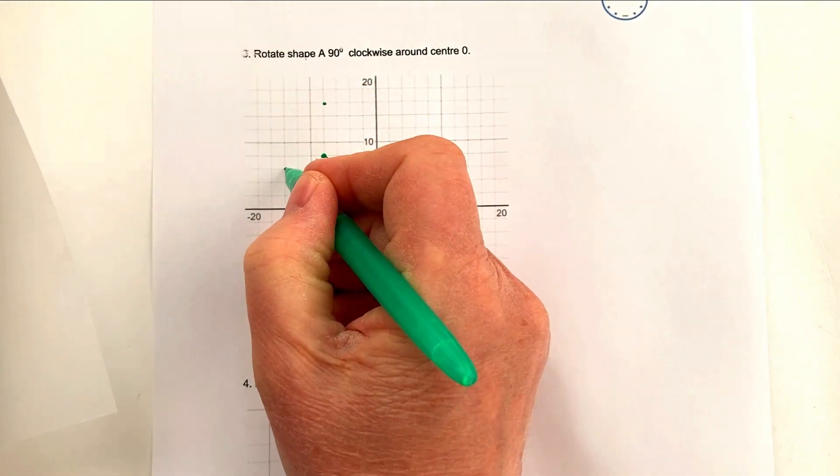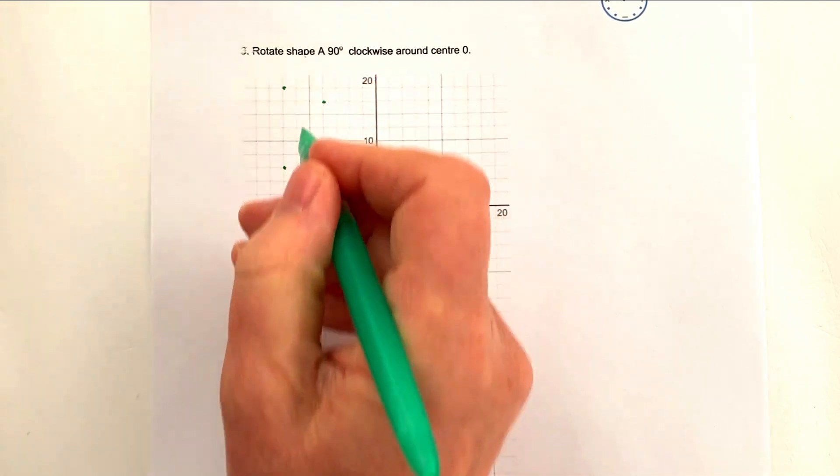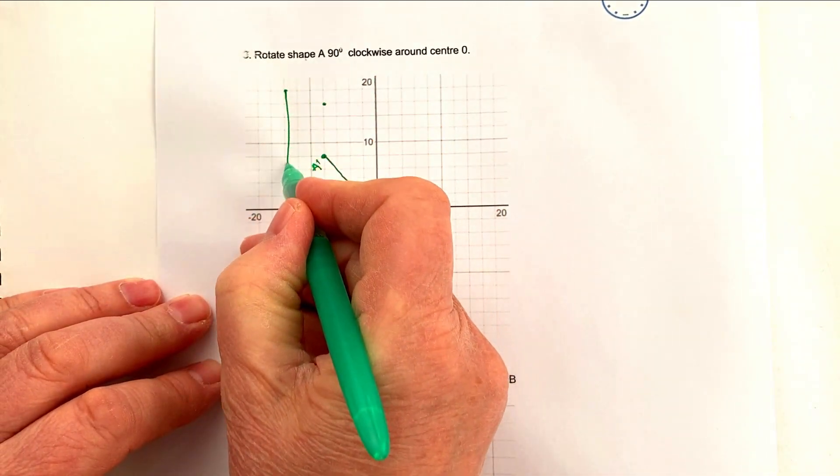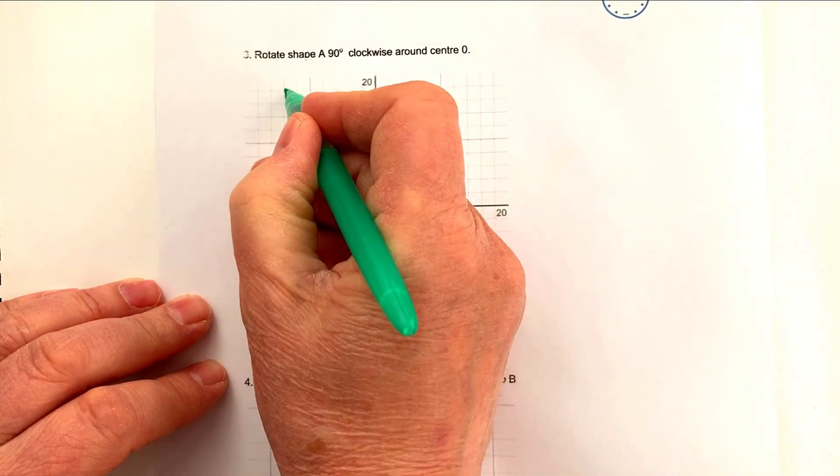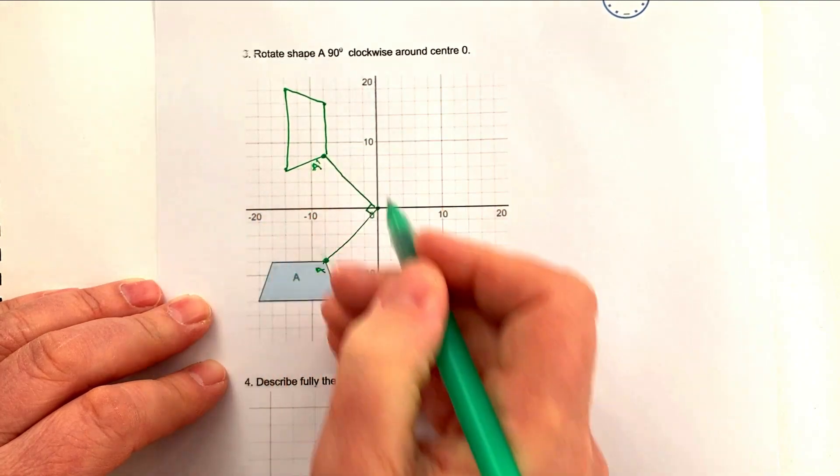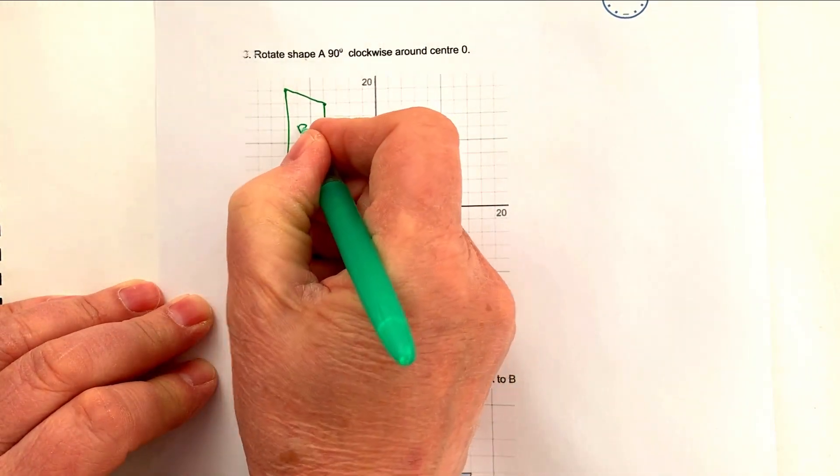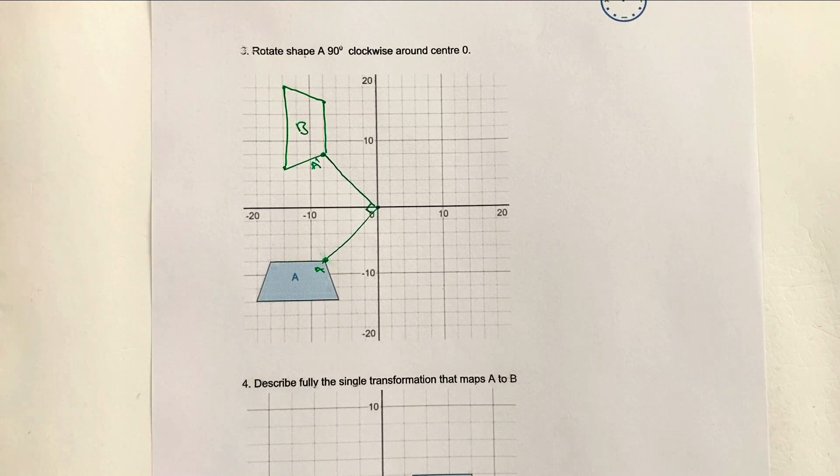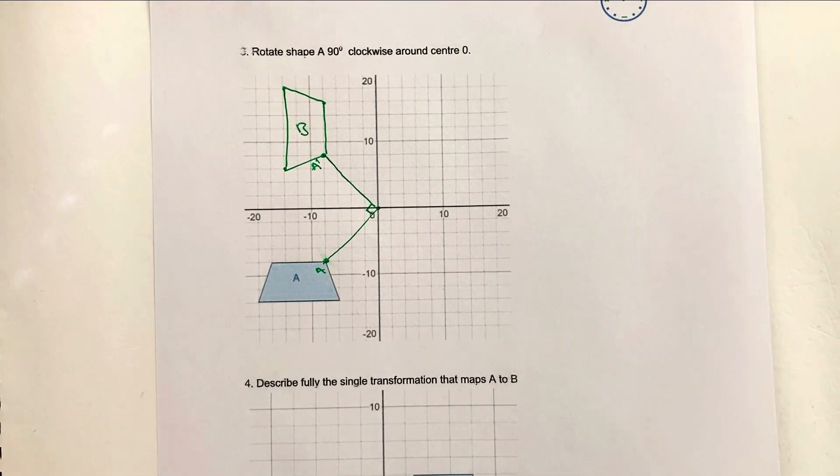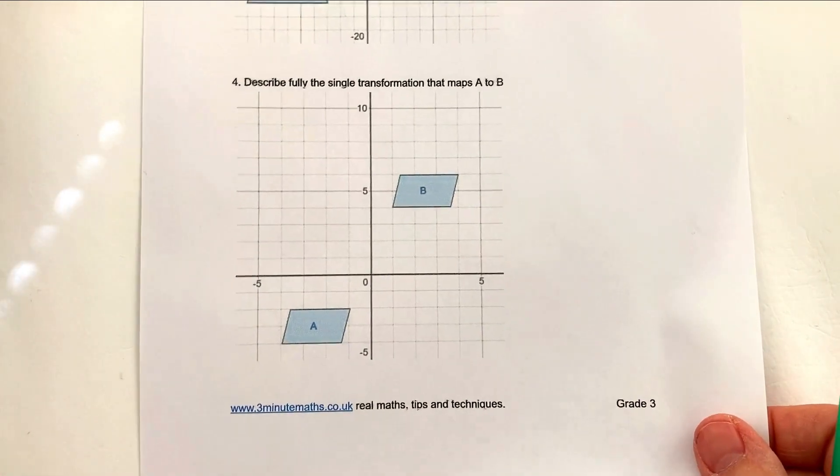I think it's going to be this point here and this point here. And then if I join those up, obviously it makes it much neater if you use a ruler. But you're going a 90 degree rotation from A to B. Hopefully that's all right for you. Let's move on then to the final question.